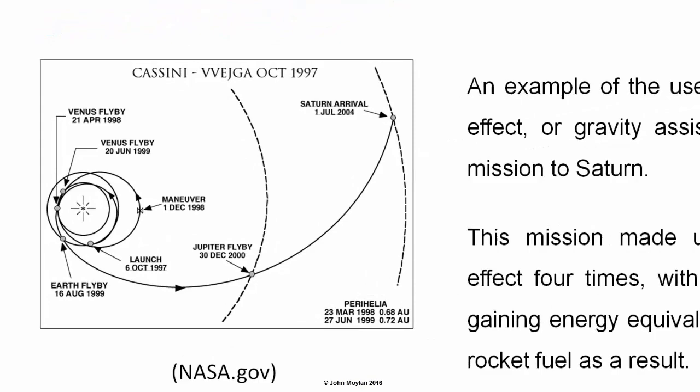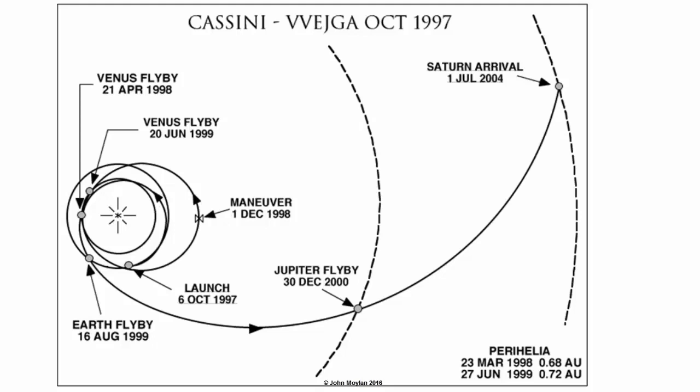As can be seen from the diagram, the trajectory of the spacecraft was quite complicated. It was launched from the Earth on the 6th of October 1997, and flew in towards Venus, from which it gained a gravity assist on the 21st of April 1998, marked on the diagram as Venus flyby. From there, it climbed up out of the Sun's gravity well until it completed a manoeuvre just beyond the orbit of Earth on the 1st of December 1998.